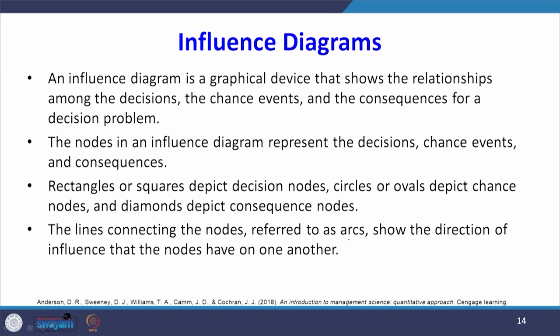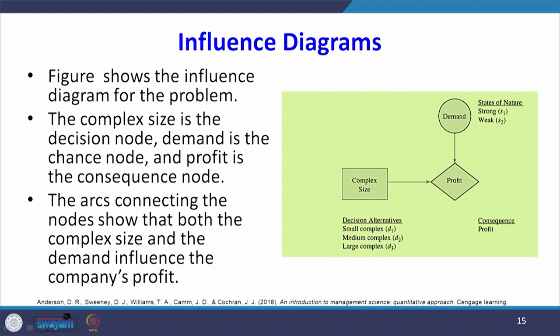Rectangles or squares depict decision nodes, circles or ovals depict chance nodes, and diamonds depict consequence nodes. The lines connecting the nodes — referred to as arcs — show the direction of influence. In this picture, the complex size is the decision node, demand is the chance node, and profit is the consequence node. The arc connecting the nodes shows that both complex size and demand influence the company's profit.